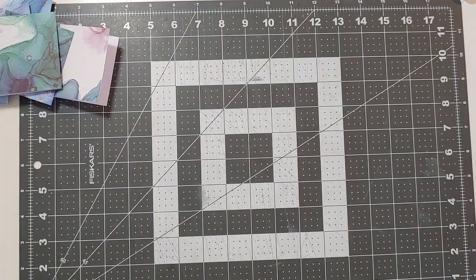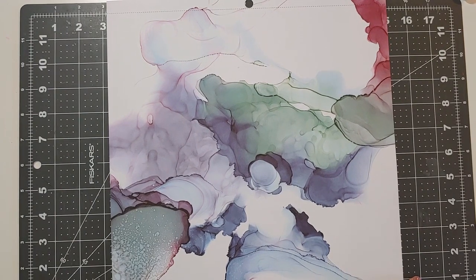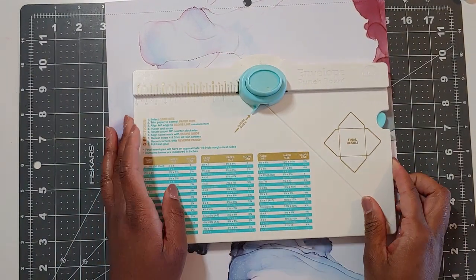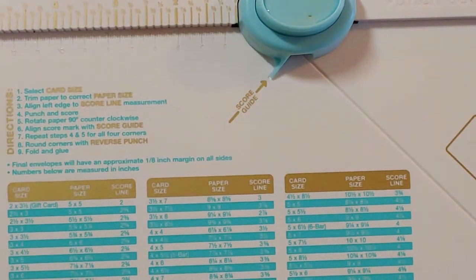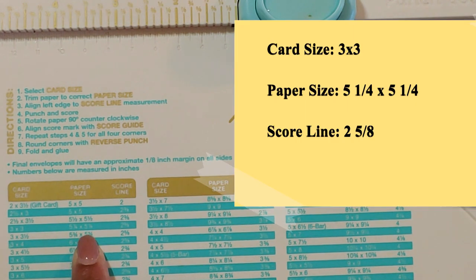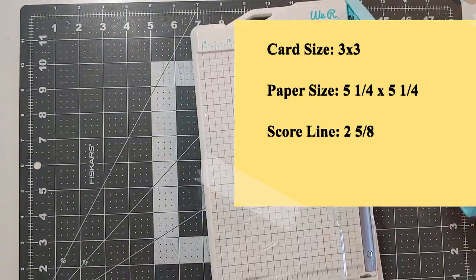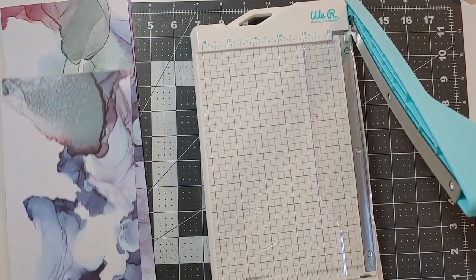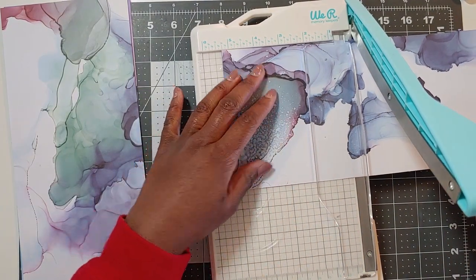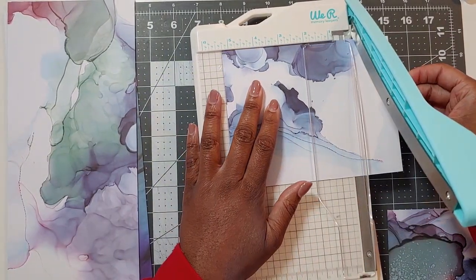So next we're going to move on to making our envelopes. So for this we need two pieces of pattern paper and on the We Are Memory Keepers envelope punch board that I'll be using it says for a three by three card to make an envelope you need a piece of paper that is five and a quarter inches by five and a quarter inches. So I'm going to cut down these pattern papers to 12 inches by five and a quarter and that's what I have here. And now I'll cut these down to five and a quarter. So now I have a five and a quarter square piece of paper.